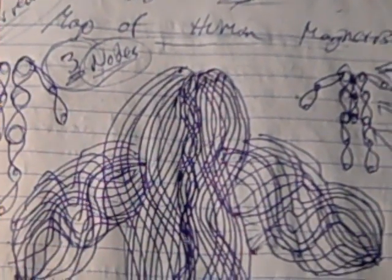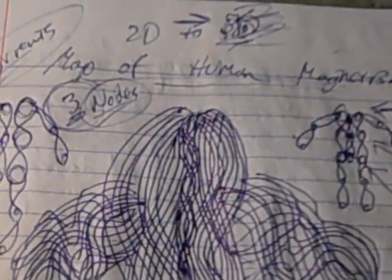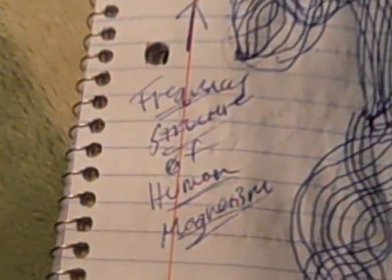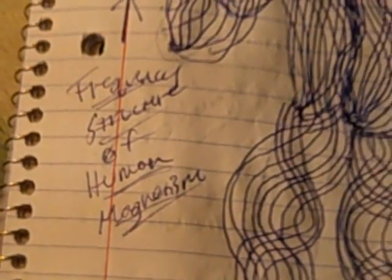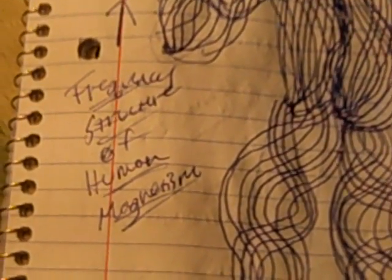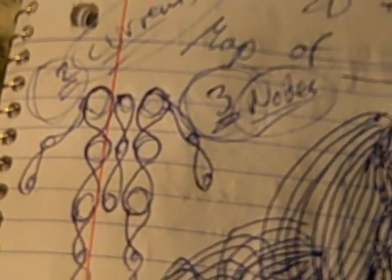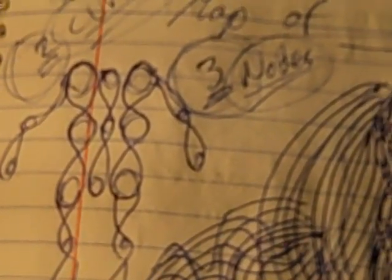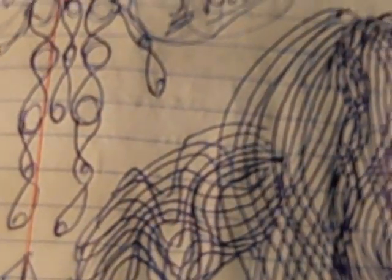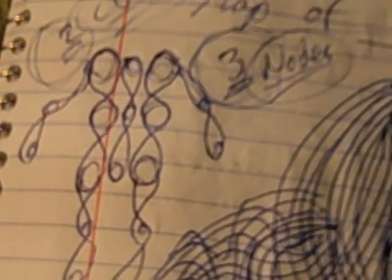Okay, so this is a new drawing, a map of human magnetism. Another way to look at it is the frequency structure of human magnetism. And what that means is precisely how to map out human magnetism in a more or less correct or accurate way in order to model it. So that frequency structure essentially is the template for modeling human magnetism.